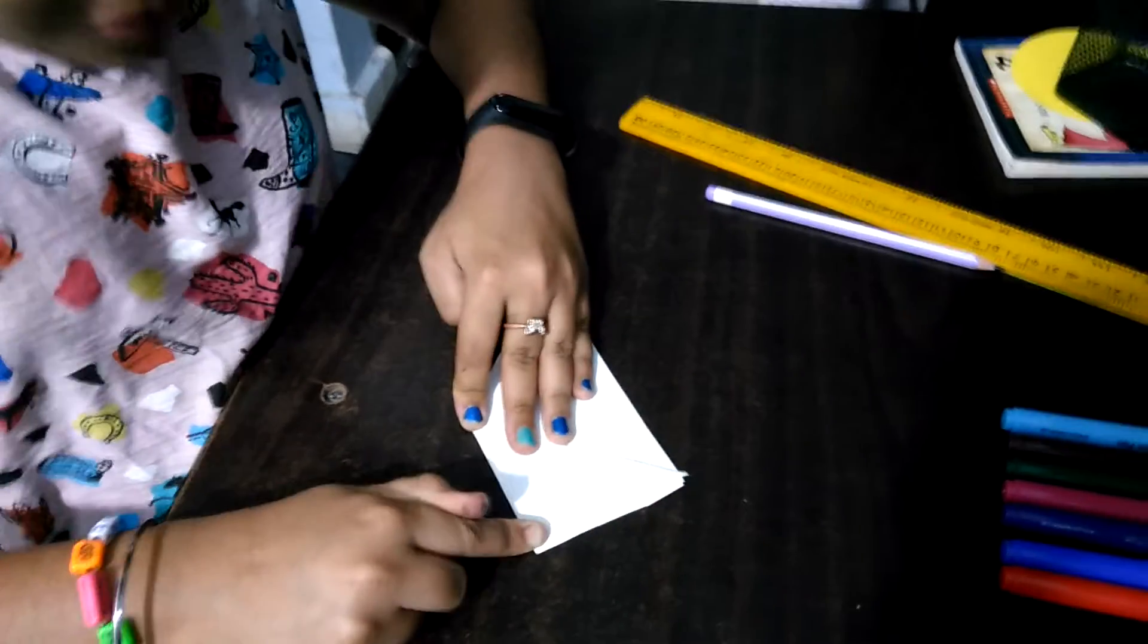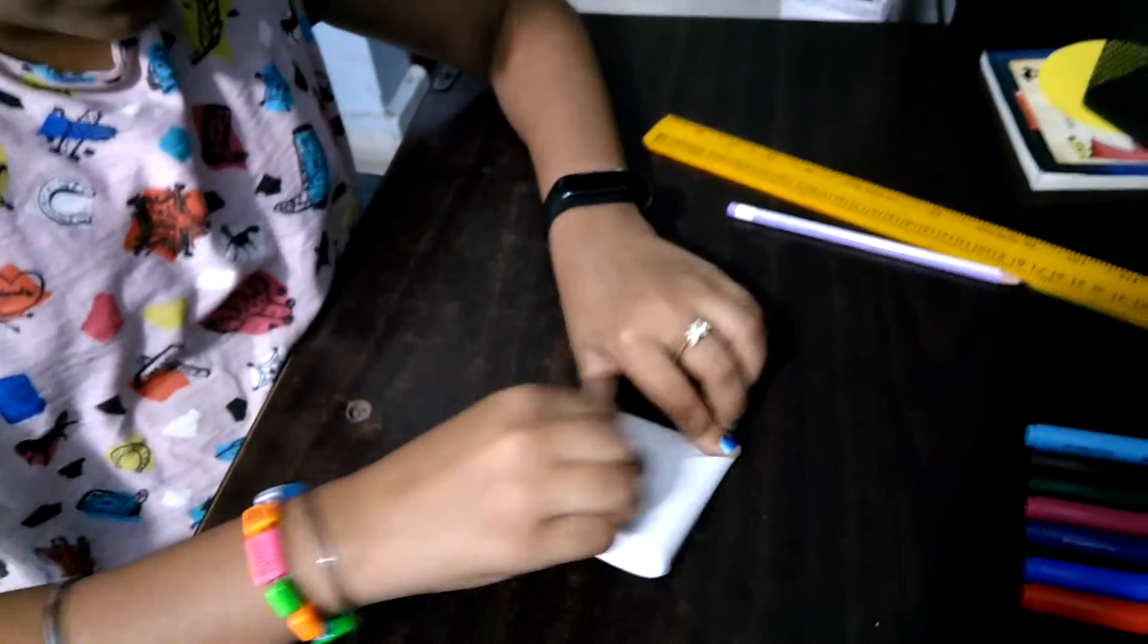Take this side, join it to the top end of the triangle, and do the same with this side.